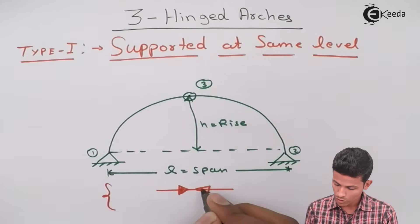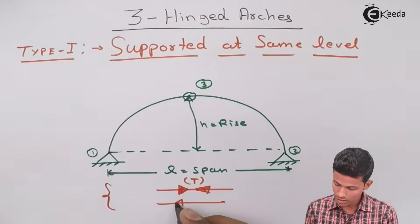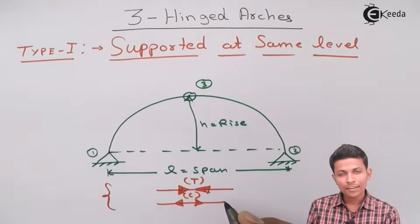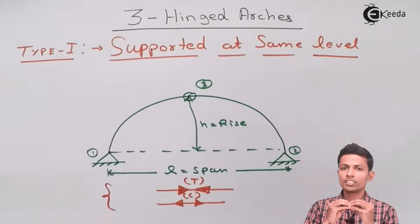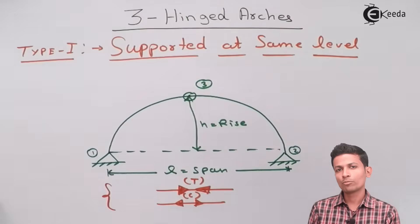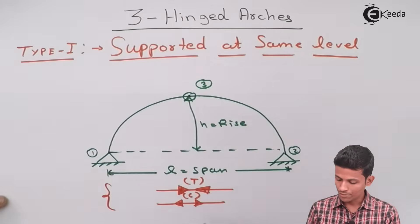This is your tension sign and this is your compression sign. Tension means two arrows pointing toward each other — that is tension. Two arrows pointing away from each other — that is compression.